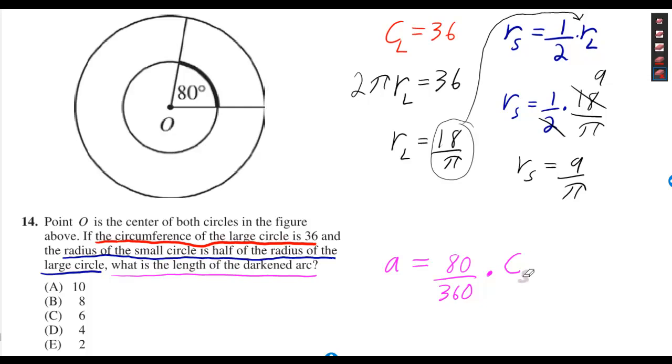The circumference of the small circle can just be figured out by doing 2π times the radius of the small circle. And we know the radius of the small circle is 9 over π.